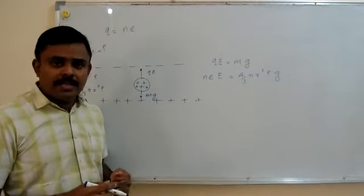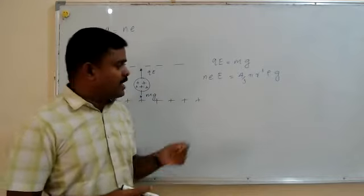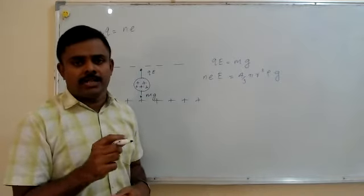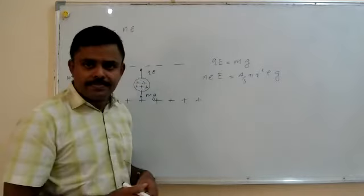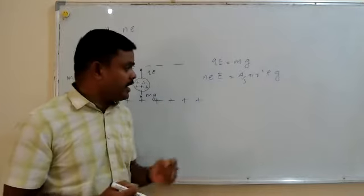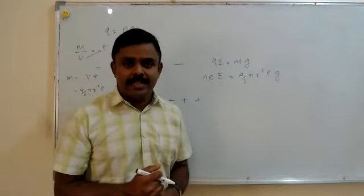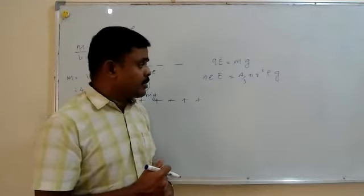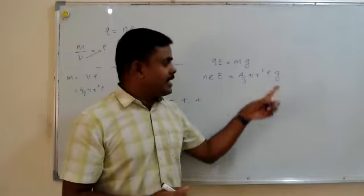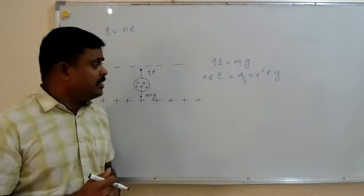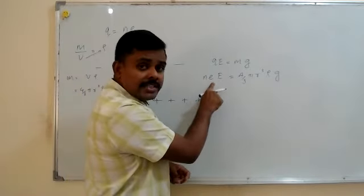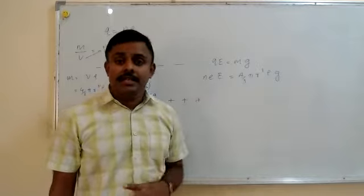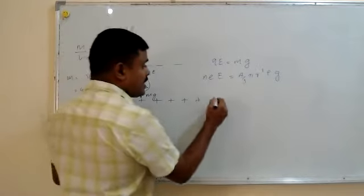Based on this equation, different types of exam questions can be asked. Question one: find the number of electrons n on the drop. Question two: find the total charge q on the drop, where q = ne. Question three: find the electric field E required to hold the oil drop stationary. Question four: find the radius r of the oil drop — this appears in the chapter's additional exercises, question number two. Question five: find the density ρ of the oil.